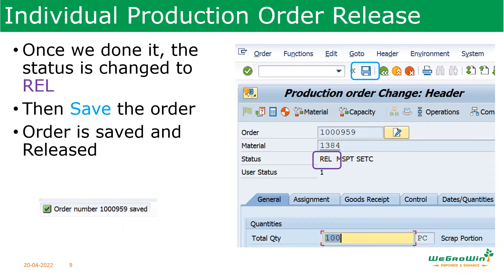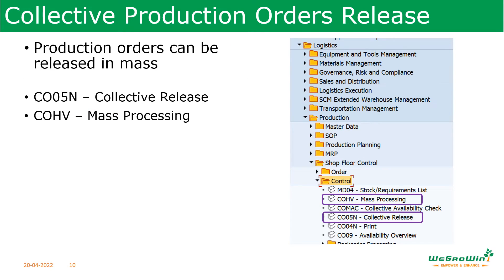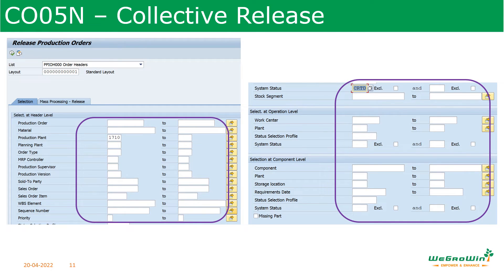Now we will see how to release orders collectively. To release orders collectively there are two steps. One is using transaction CO05N collective release, or COHV mass processing. Now we discuss how to do it in CO05N collective release. After entering the transaction, this is the selection parameter page. We can select orders to be released based on various parameters like production order, material, plant, order type, MRP controller, production scheduler, system status, work center — at operation level, component level, header level. With these options we can select and execute.